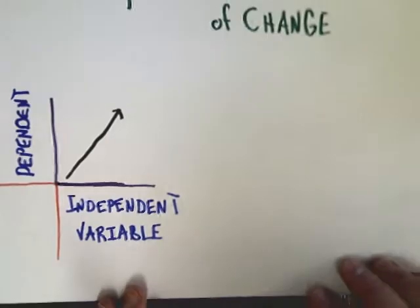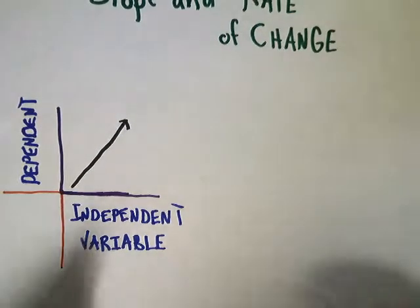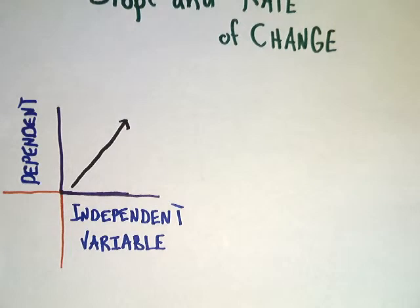Now, independent variable is the thing that would happen anyway. If I'm going to measure fruit flies, let's just say I'm going to measure them over time. Well, the time would occur whether I have fruit flies or not, so it's an independent variable. The dependent variable, in order to give it some context, I have to have the independent variable.